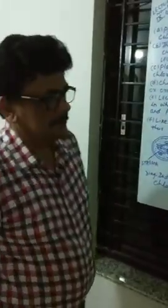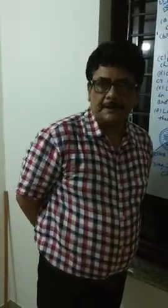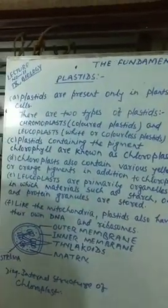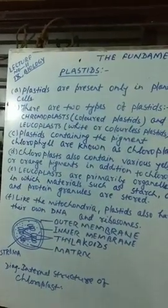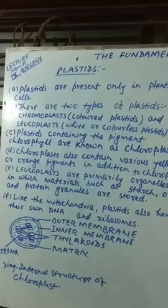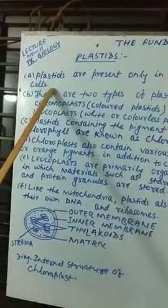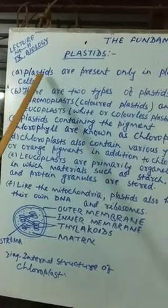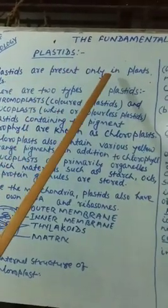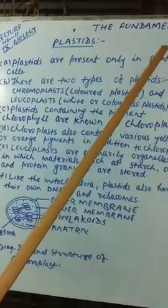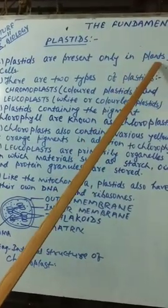We are going to start with some organelles like plastids. First point: plastids are present only in plant cells. You should know it is not found in animal cells.